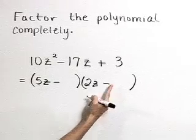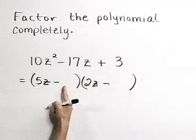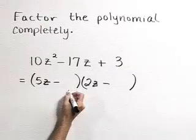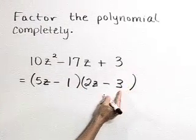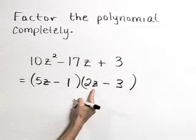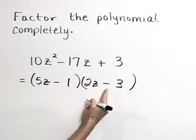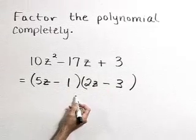So now it's just a matter of putting the 1 and the 3 in the appropriate places. If we place a 1 here coupled with the 5z and the 3 here coupled with the 2z, in fact that's a minus 1 and a minus 3, I think that's going to work. Let's check it.